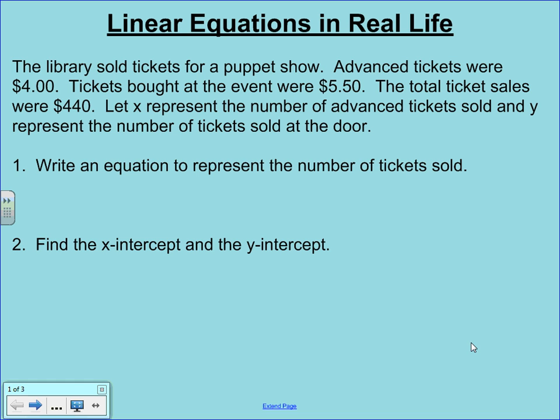It says the library sells tickets for a puppet show. Advanced tickets were $4 and tickets bought at the event were $5.50. The total ticket sales were $440. We're going to let X represent the number of tickets that were sold in advance and Y represent the number of tickets that were sold at the door. And our task here in number one is to come up with an equation that is going to represent this scenario.